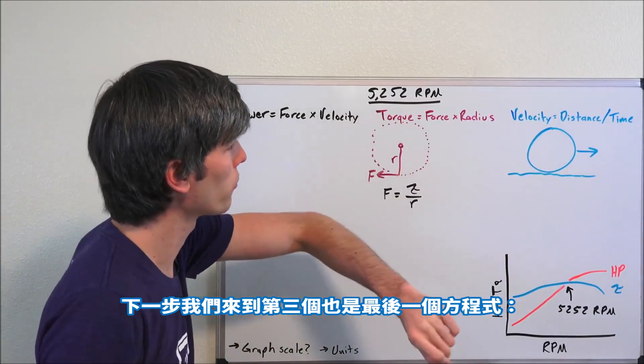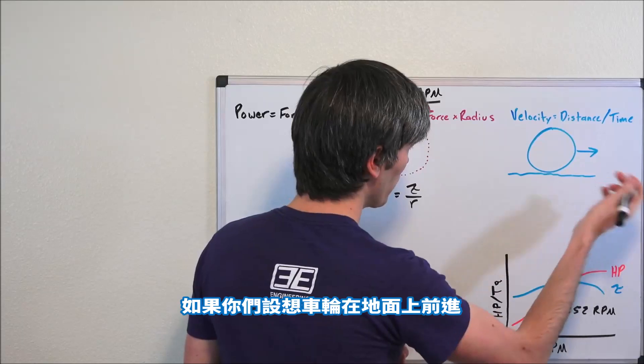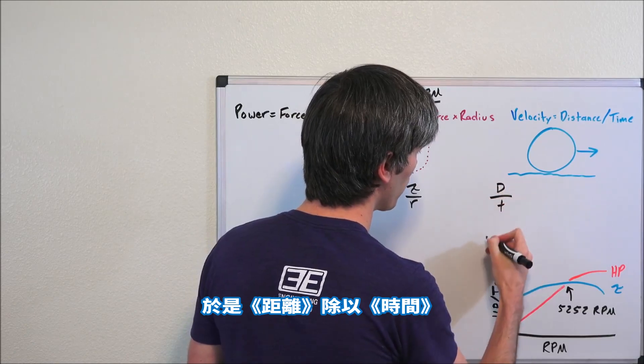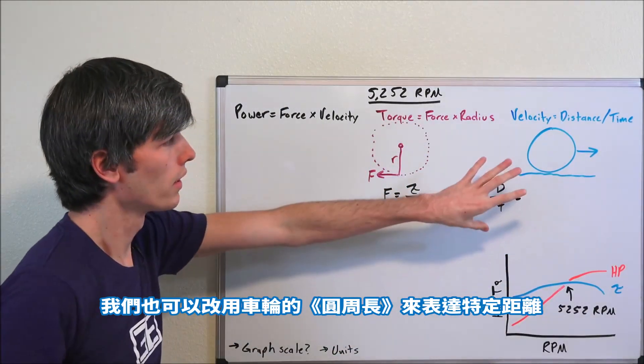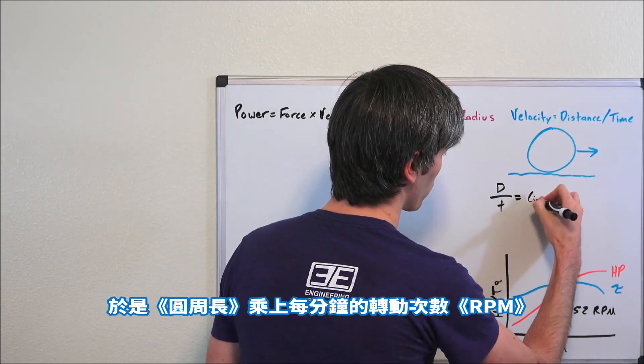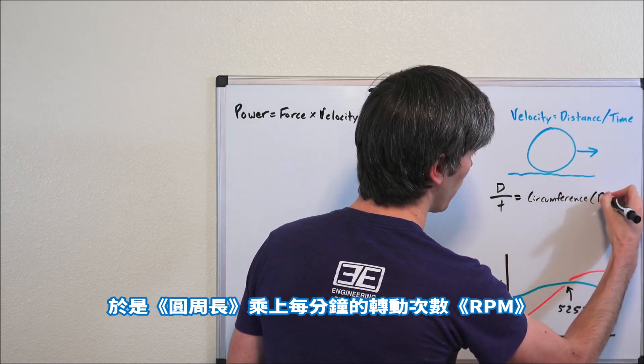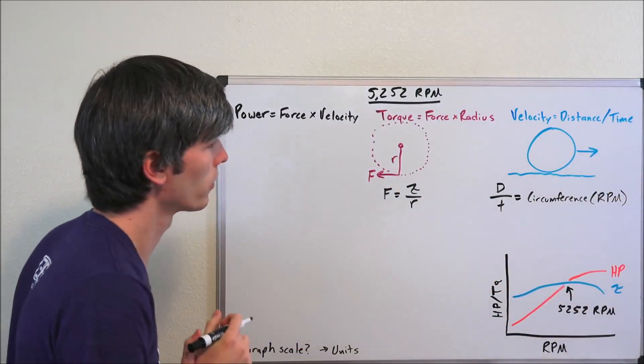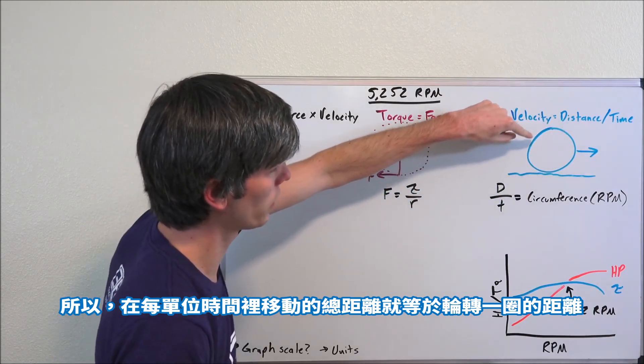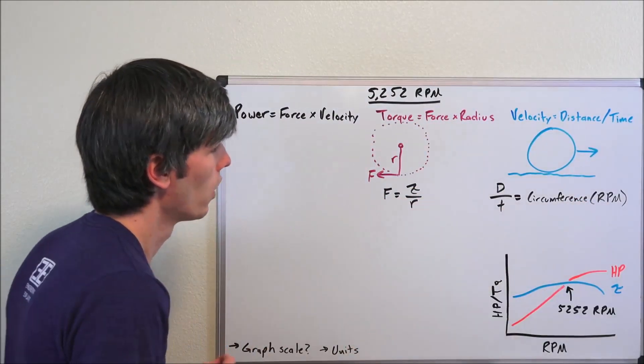Next we move on to our third and final equation: velocity is equal to distance over time. So if you think about a wheel traveling along the ground, that wheel is moving at a specific distance per unit of time. So distance divided by time. And we can also state this as the wheel circumference - so that's the total distance it will move per revolution - multiplied by the revolutions per minute, RPM for instance.